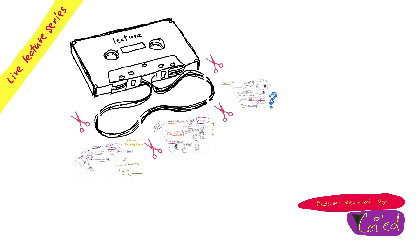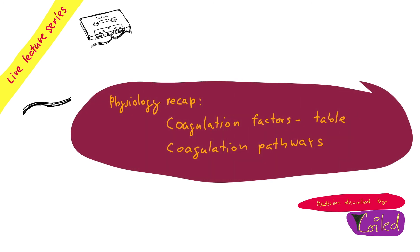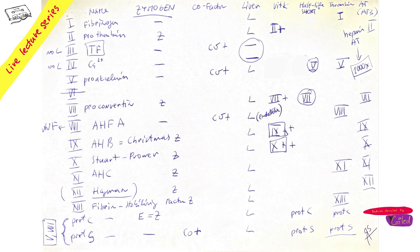And now let's get to the coagulation cascade and factors. So let's go through them one by one. This is going to be a big table: two, three, four, five, six, seven, eight, nine, ten, eleven, twelve, thirteen, still no protein C, protein S.